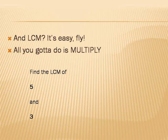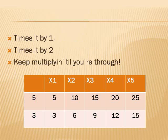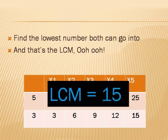And LCM, it's easy. All you've got to do is multiply. Times it by one, times it by two. Keep multiplying till you're through. Find the lowest number both can go into. And that's the LCM.